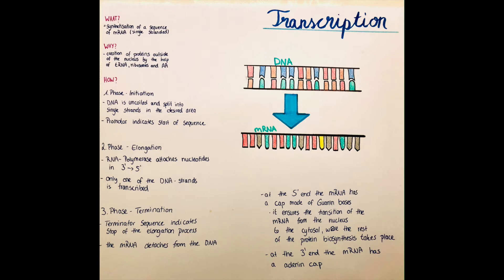Then the RNA polymerase attaches to this sequence on the promoter and goes in the three to five direction, taking nucleotides and attaching them one by one. So only one of the DNA strands is transcribed and we get one single-stranded copy. The RNA polymerase follows along the DNA from the promoter in the three to five direction until the terminator sequence indicates that this process can be stopped now and the sequence is completed.